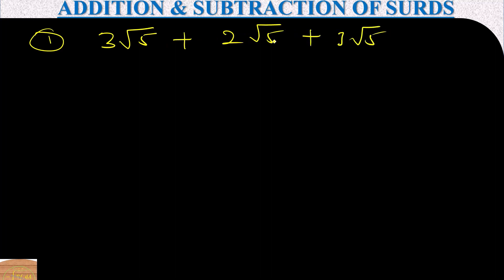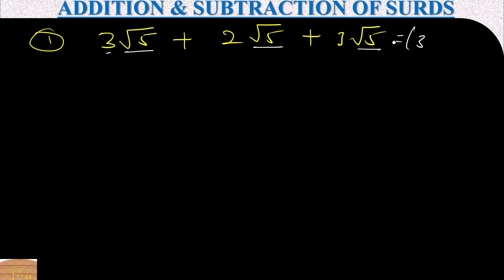Let's solve example one together. We have 3√5 plus 2√5 plus 3√5 — we can put them all together since they have the same form. So we add the coefficients: three plus two plus three equals eight, giving us 8√5.